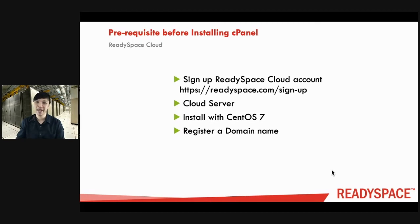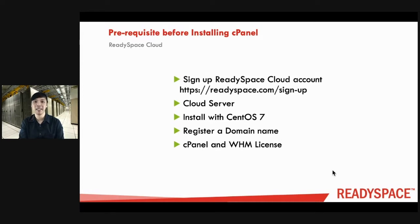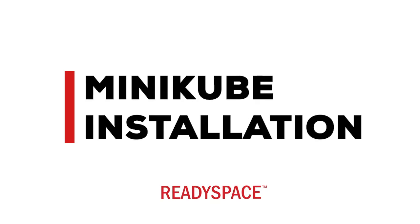Register a domain name — that is a very important part of running a cPanel server. Then subscribe to a cPanel and WHM license, which are all readily available in a ReadySpace cloud account. The installation requirements are: a clean, fresh, minimal installation of CentOS 7; a minimum of 1 GB RAM, with 2 GB recommended; at least 20 GB of disk space, with 40 GB recommended; a valid cPanel license; and a standard hostname with a fully qualified domain name.